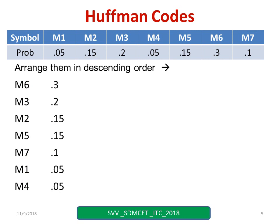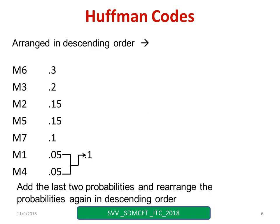First step: simply add the last two probabilities and rearrange the probabilities again in descending order. Now I have added these two — the total becomes 0.1. Again I have to rearrange, and since 0.1 is last, I can simply rewrite the remaining values in the next column.